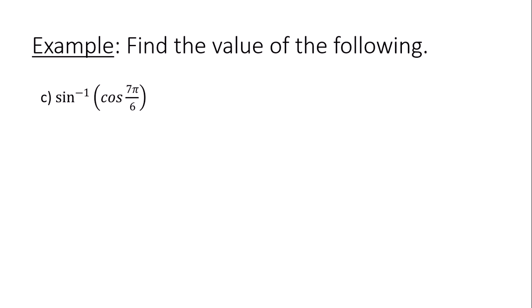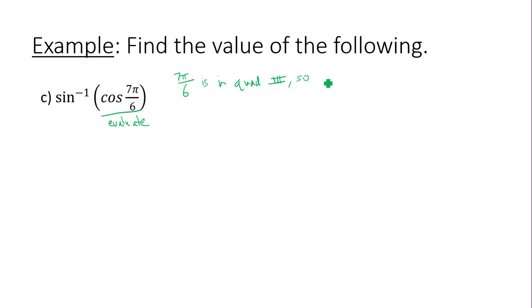This time the inverse trig function is on the outside and the regular function is on the inside — and no, we can't cancel them out, they are two different types of trig functions. The best thing to do is focus on the inside and evaluate. We know how to evaluate cosine of seven pi over six. Seven pi over six is in quadrant three, and since we're in quadrant three dealing with cosine, cosine of seven pi over six will be a negative answer.